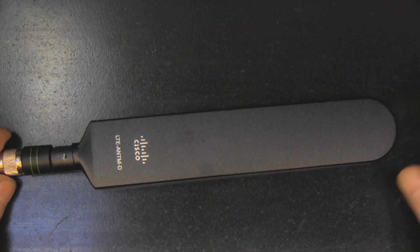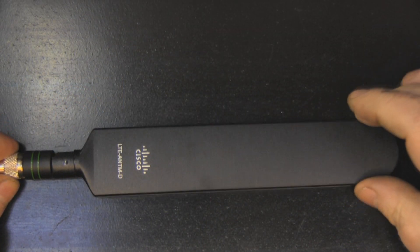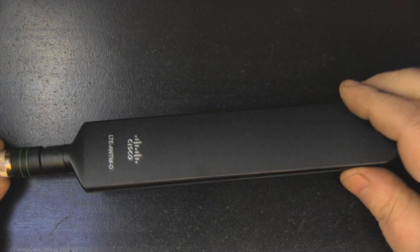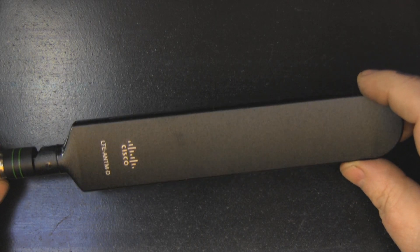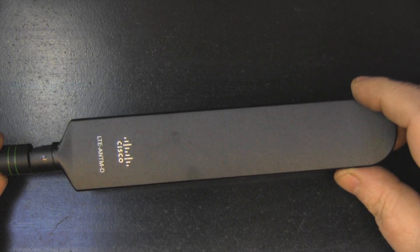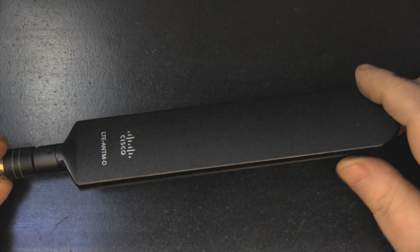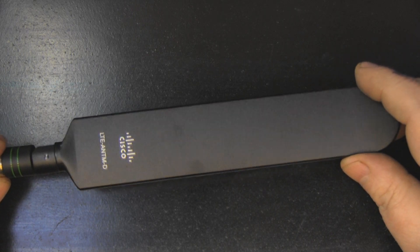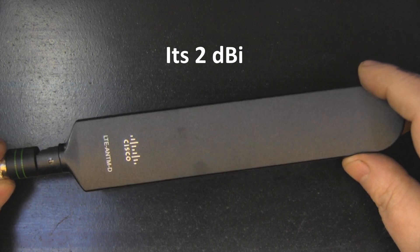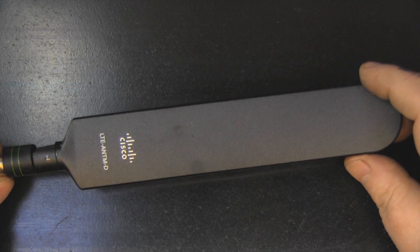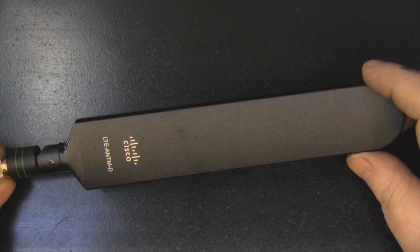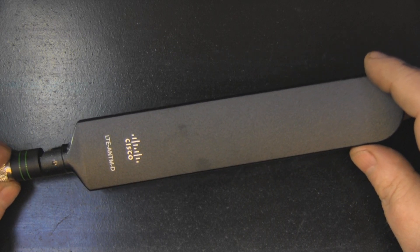I've got another Cisco antenna on the bench for us to take a look at, an omnidirectional Cisco antenna. Not too powerful, the gain on this is maximum 5dB, minimum 3dB, possibly even 2dB. You'll see why when we take a look at it on the network analyzer. It's the Cisco LTE ANTM-D.